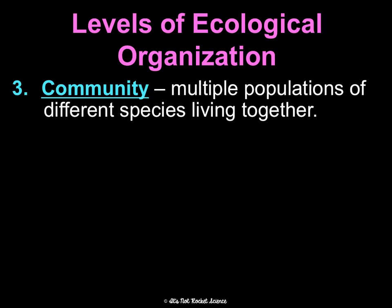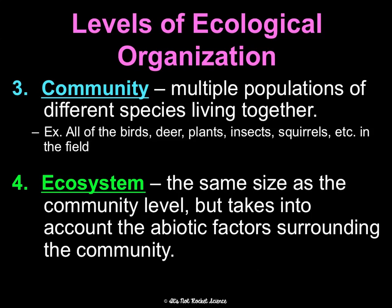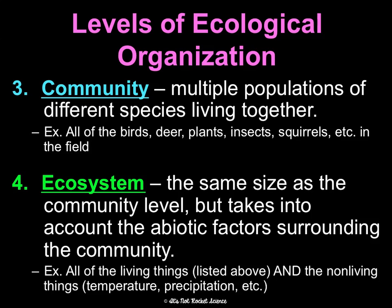Getting a little broader, we have a community — all the populations of different species living together, meaning all the living things in a defined space, such as all the birds, deer, plants, insects, squirrels, and bacteria in that field. An ecosystem is the same as a community, but we also take into account all the abiotic — non-living — factors: the temperature, the precipitation, and any natural disasters or major climate changes that occur.